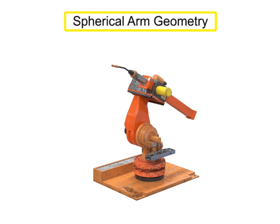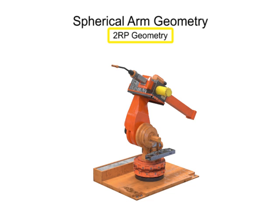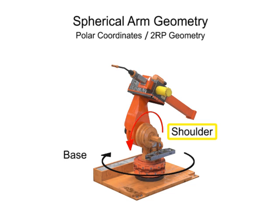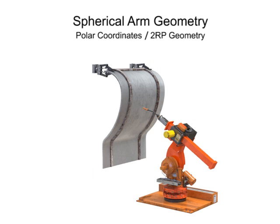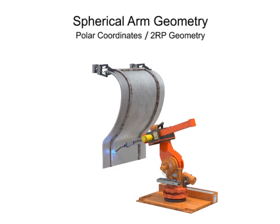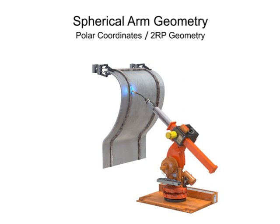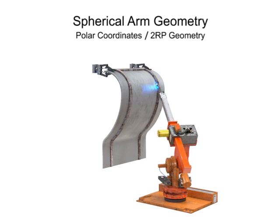Spherical arm geometry robots can rotate in two directions and move linearly in one, and thus are given the designation of R2RP. The robot has base rotation, shoulder rotation, and prismatic or linear motion at the arm. This type of robotic arm is most often used in machine-tending, material handling, welding, painting, coating, and assembly tasks.